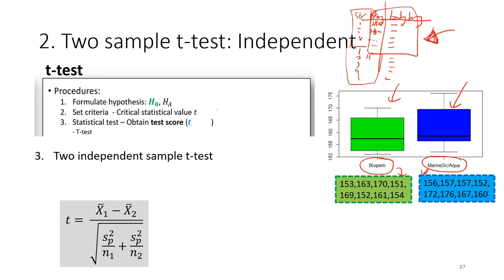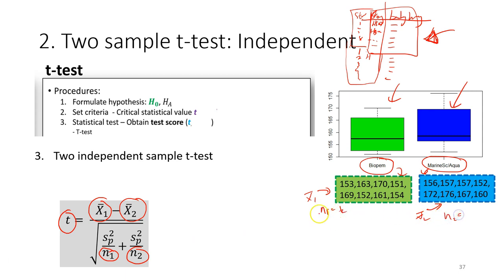The formula for the independent t-test is more complicated than the one-sample test but not too difficult. You still calculate a t-value. The formula includes the mean of the first sample and the mean of the second sample, the sample sizes N1 and N2 (number of observations), and a new term called the pooled variance. The pooled variance is calculated by obtaining the sum of squares for each sample and combining them.